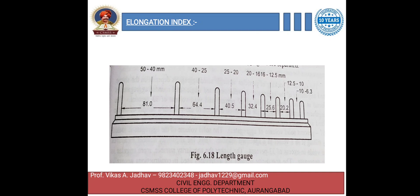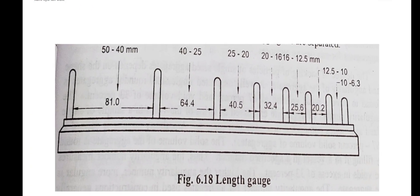In a similar way to the thickness gauge, you need to determine from which gauge slot the aggregate should be passed. Depending on the size of the aggregate — which gauge it passed through and which it was retained on — you pass that aggregate through the particular gauge of the length gauge.